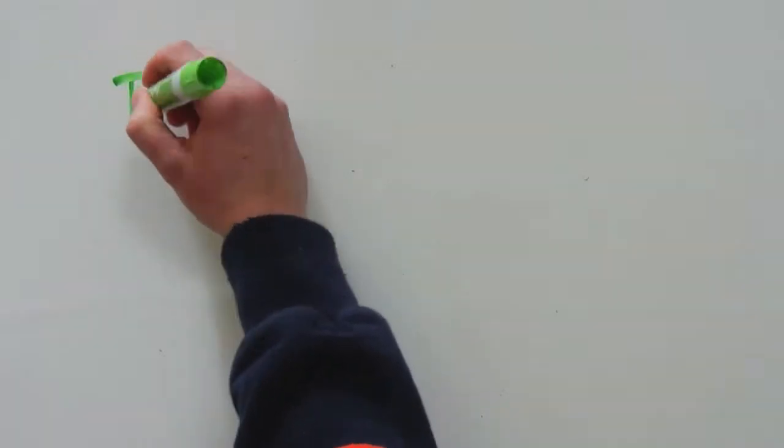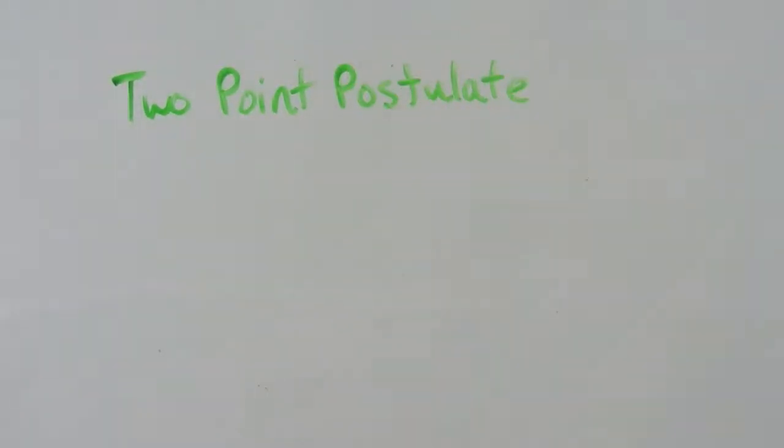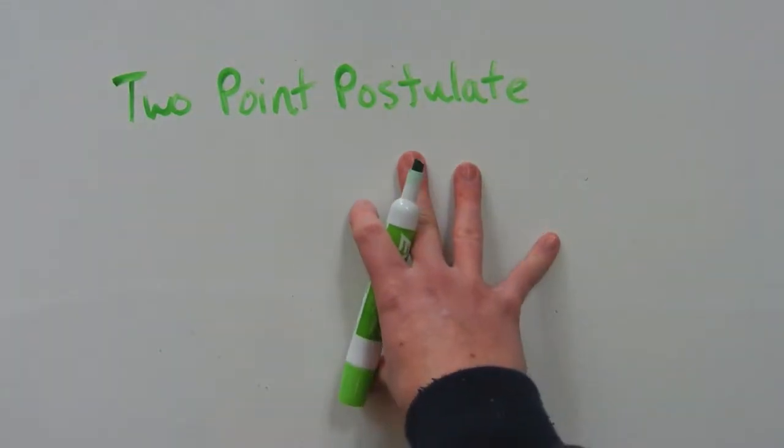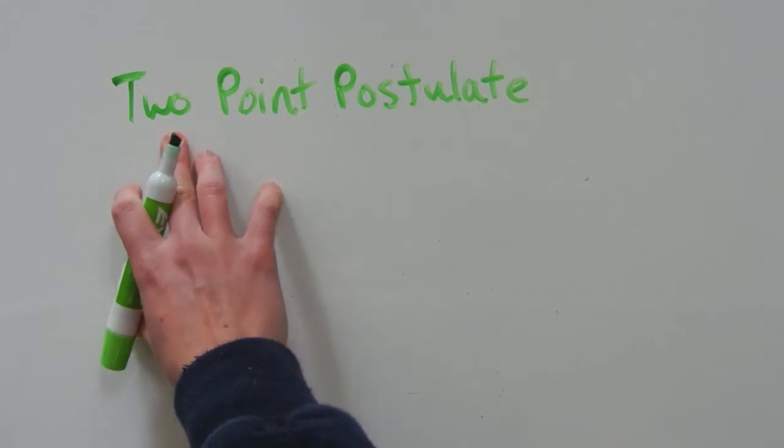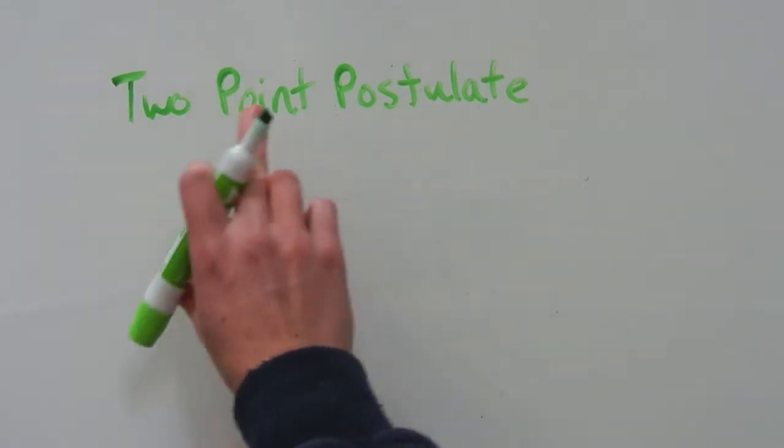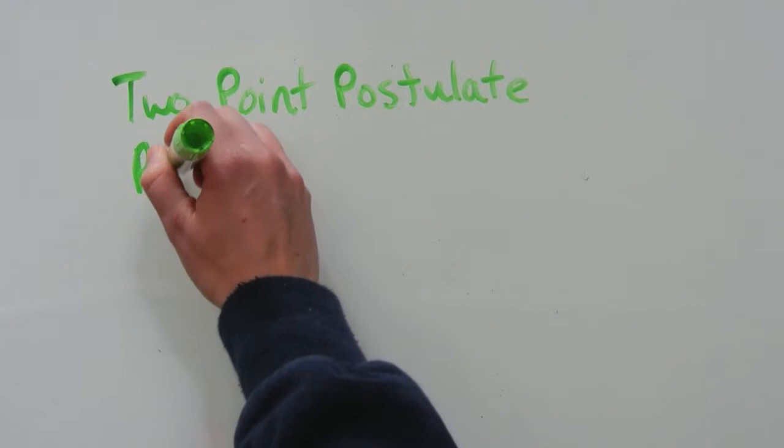So the first postulate we're going to go over is the two-point postulate. Now the way I'm going to be labeling the postulates in my video series is going to be P and then a corresponding number. So our first one, the two-point postulate, is going to be our first postulate, P1.